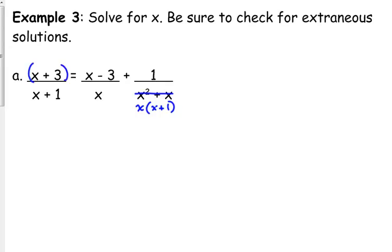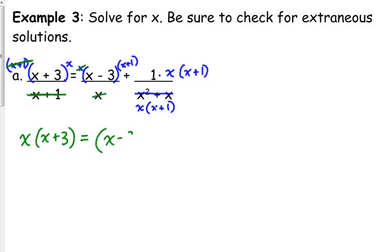So go through, multiply everything by x and x plus 1. The x plus 1's cancel in that first one, so we have x times x plus 3 equals the x cancels in the second one, x minus 3 times x plus 1. Don't lose your plus sign. Everything cancels in that one, but you've got to bring down that plus 1.